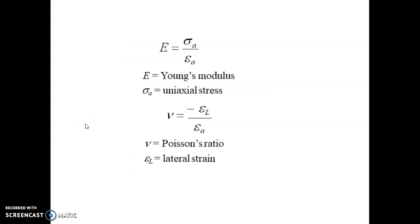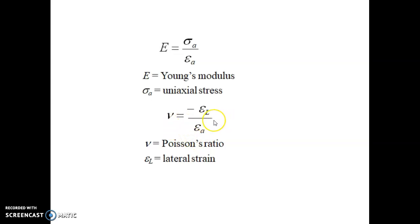We know that strain is related to stress through a constant known as Young's modulus — a property of materials that may change from material to material. E is given as stress divided by strain. Another important concept in strain and stress measurement is Poisson's ratio, which is the ratio of lateral strain divided by linear strain.